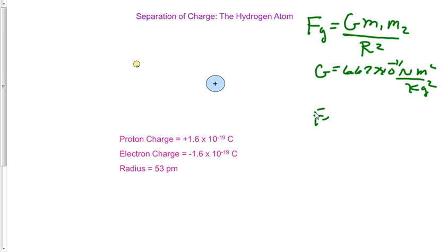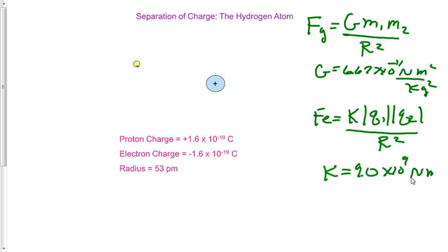The equation looks like this: Force electric equals a new constant, k, also known as Coulomb's constant, multiplied by the absolute value of q1, multiplied by the absolute value of q2, all divided by r squared. And the k constant is equal to 9.0 times 10 to the ninth newton meter squared divided by C squared.